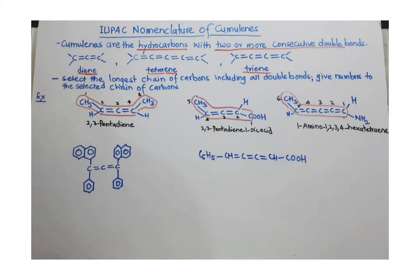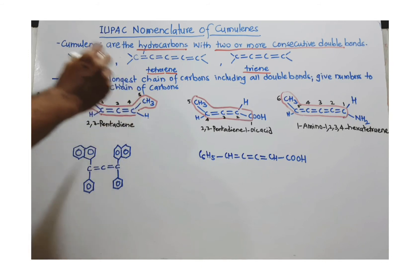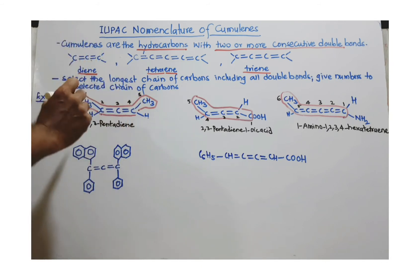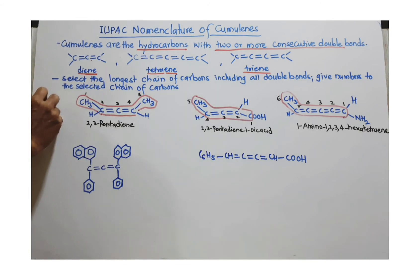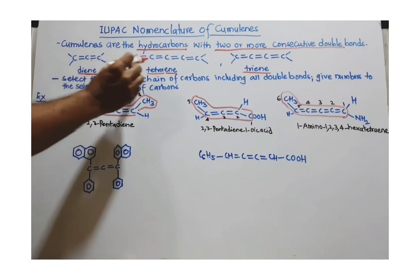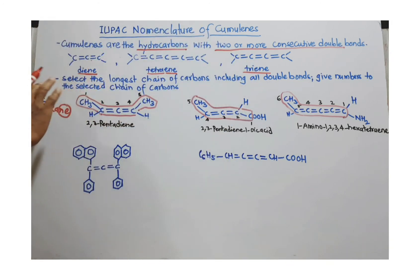When you provide a name to a cumulene, you have to select the longest chain of carbon including all double bonds. Then provide numbers to the selected chain such that all double bonds get the least possible number. After that, find the name of its parent alkane and replace '-ane' with 'diene', 'triene', or 'tetraene' to get the IUPAC name. These are the general rules of IUPAC nomenclature of cumulenes.